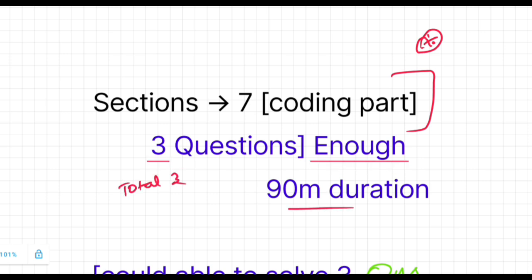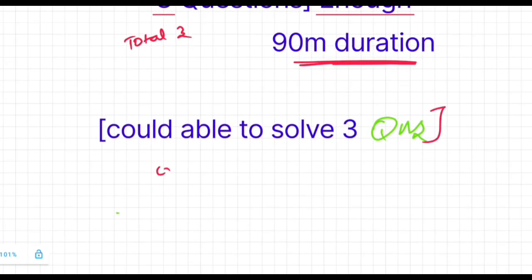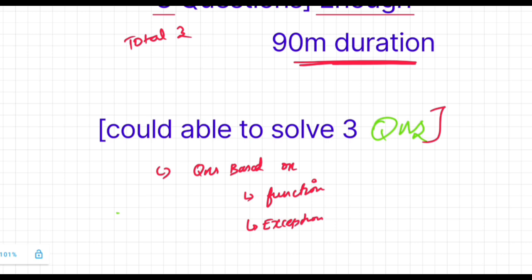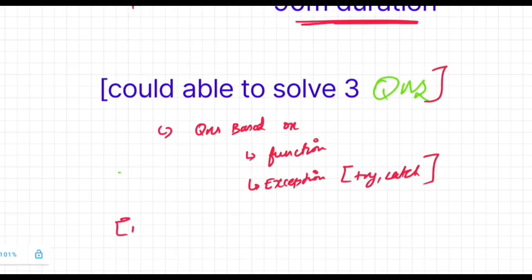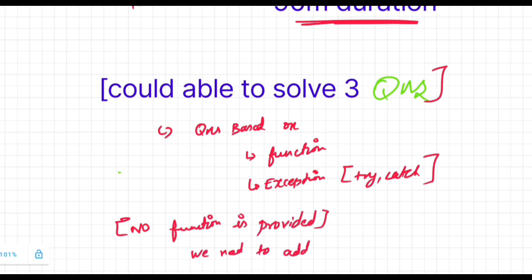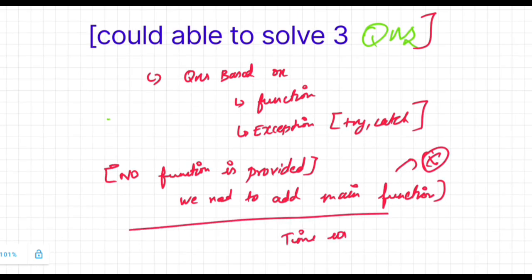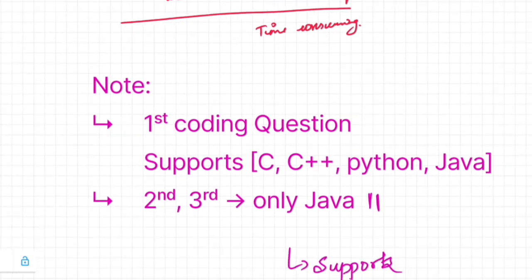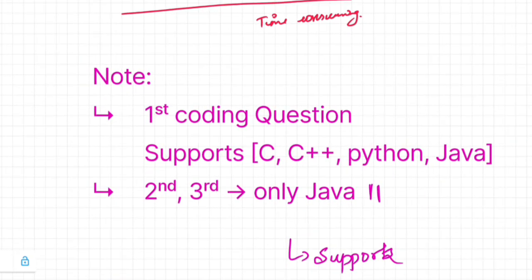Let us discuss Section 7, which is the Coding part. There will be three questions to solve and the duration for this section is 90 minutes. The questions will be based on functions and try-catch expressions — they instruct you to use try-and-catch blocks to catch exceptions and show the output. Most people could solve all three questions. Note that no function templates are provided; it is an empty compiler where you need to write everything including the main function.